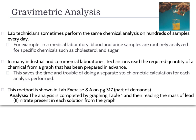Gravimetric analysis is often used in a lab. Because lab technicians sometimes perform the same analysis hundreds of times every day, they graph the data. For example, in a medical laboratory they measure blood and urine samples for the same things for hundreds of different people. Instead of doing the stoichiometry repeatedly, technicians read the quantity from a graph prepared from known data. This method is shown in lab exercise 8a on page 317, where you make a graph of table number 1 and read the mass of lead(II) nitrate off of it.